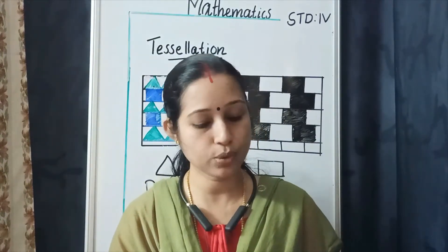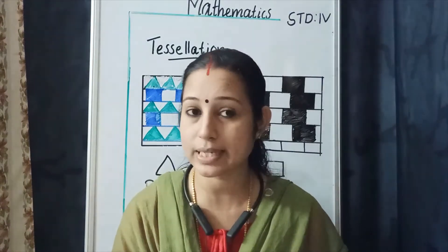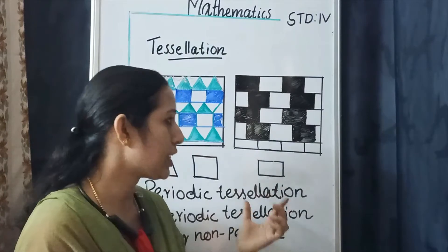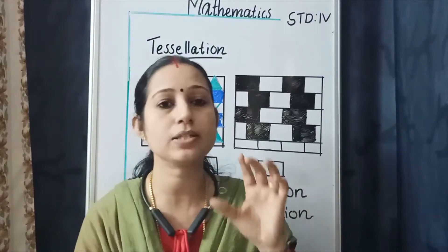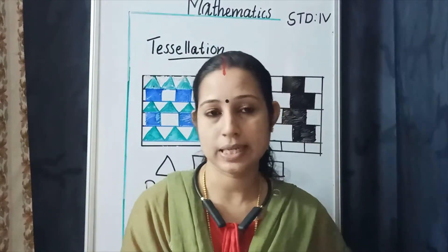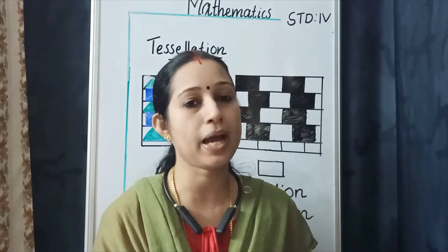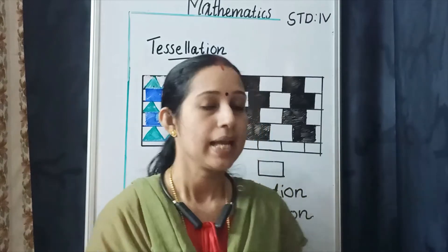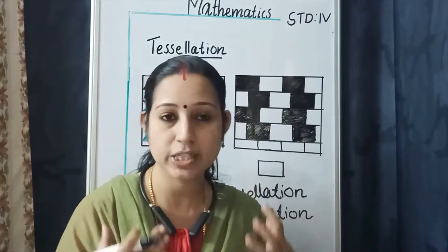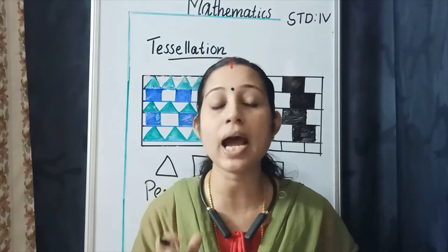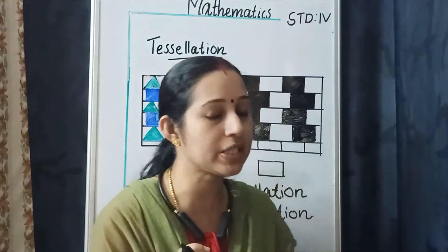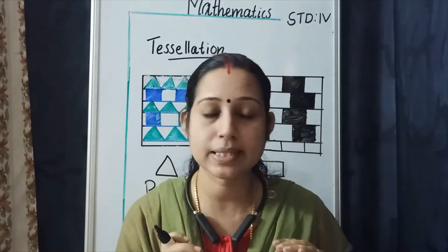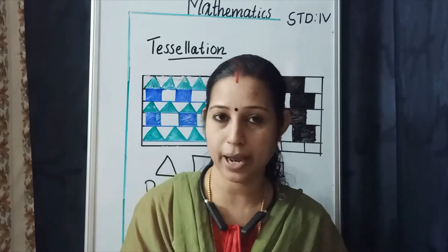There are two types of tessellation: periodic tessellation and aperiodic tessellation. A tessellation that has a repeating pattern is called periodic tessellation. A tessellation that does not have a repeating pattern is called aperiodic or non-periodic tessellation. The shape or group of shapes that repeats is called the basic shape.